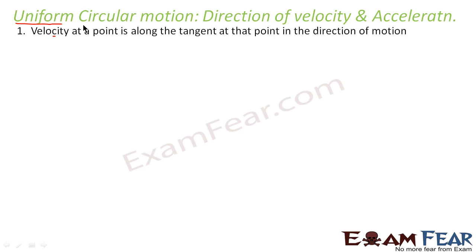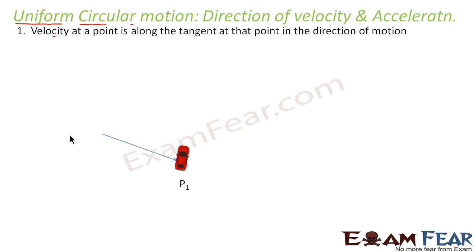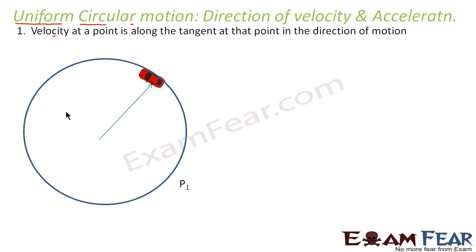What is uniform circular motion? The body is moving in a circular path with a uniform velocity. Let us suppose we have a car which is initially at some position P1, and it moves along a circular path. In case of uniform circular motion, the reference point is the center of the circle, and from the center we draw the position vector.